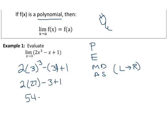54 minus 3 plus 1. 54 minus 3 being 51. And 51 plus 1 equaling 52. So our answer here is 52.